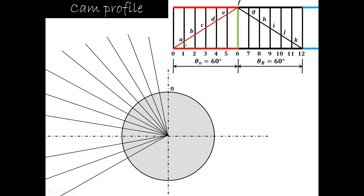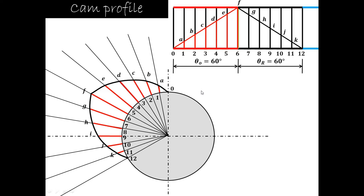Now we transfer the distances 1A, 2B, 3C, 4D, 5E, 6F, 7G, 8H, 9I, 10J, and 11K from the displacement diagram onto the corresponding radial lines on the cam layout. As you can see, these distances are transferred and marked as points A, B, C, D, E, F and so on. A smooth curve is drawn passing through all these points, and this is the cam profile in the case of the inline knife edge follower.